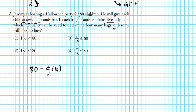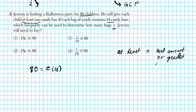Now, at least means it cannot be anything less than one candy bar per child. At least means it could be that amount or greater. This quantity has to be equal to or greater than 80. Could this quantity be less than 80? The answer is no. But this quantity could be greater — that's perfectly fine.